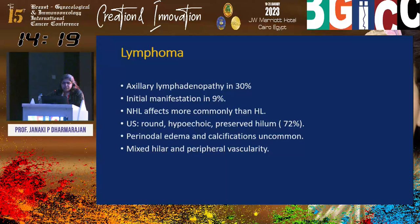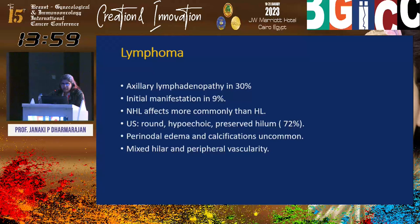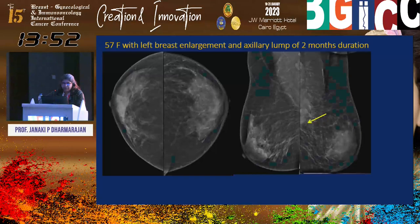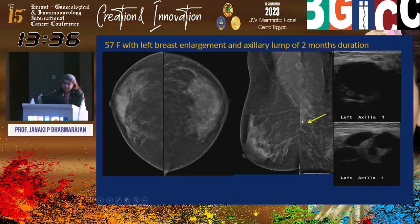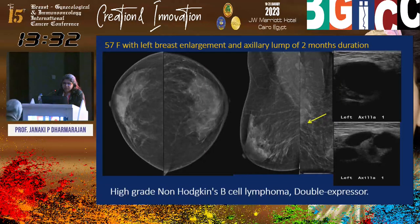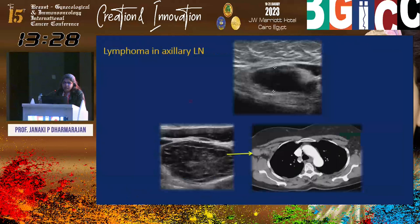Lymphoma presents as axillary lymphadenopathy in about 30% of cases, and is the initial axillary manifestation in about 9%. NHL affects axillary lymph nodes more commonly than Hodgkin's lymphoma. On ultrasound, they appear as round hypoechoic lymph nodes with hilum preserved in about 72% of cases, with perinodal mixed hilar and peripheral vascularity appearing hyperemic. A 57-year-old lady with left breast enlargement and axillary lump over two months — no mass found, but skin thickening and a posterior lesion with enlarged lymph nodes — biopsy showed high-grade non-Hodgkin's lymphoma, double expressor type.